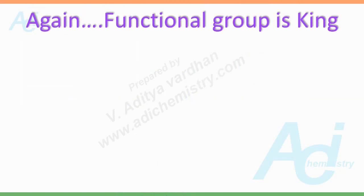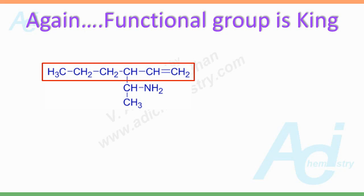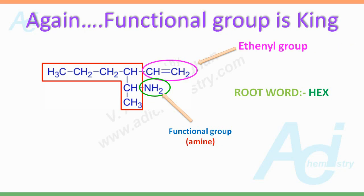Once again, the functional group is the king and is more preferred over double or triple bonds while deciding the parent chain. Look at the following molecule — there are two chains of equal length, one containing a double bond and the other containing an amine functional group. Since the functional group has the highest preference, the second chain with the functional group must be taken as the parent chain. Hence the root word is hex, whereas the CH=CH2 group is considered as a substituent, referred to as the ethenyl group.